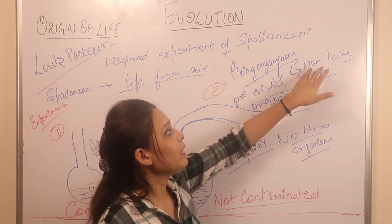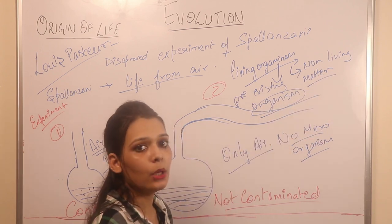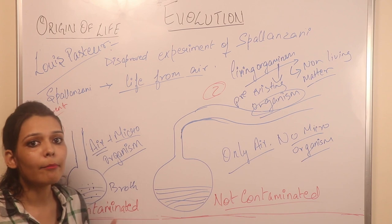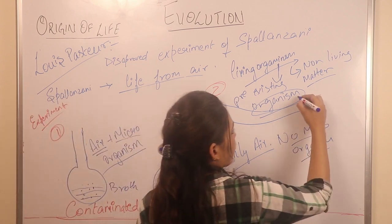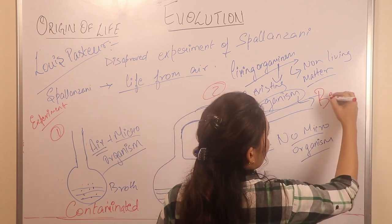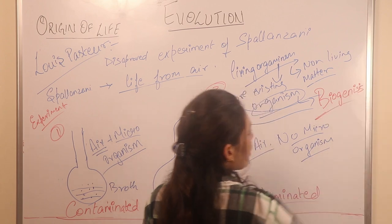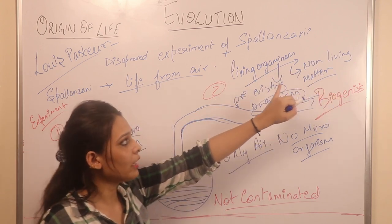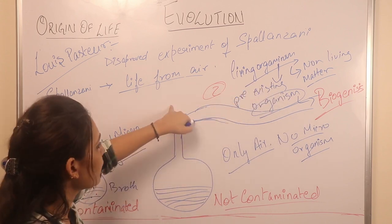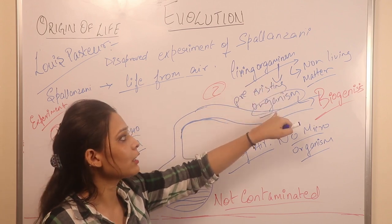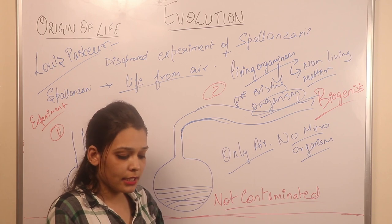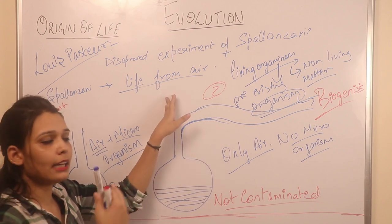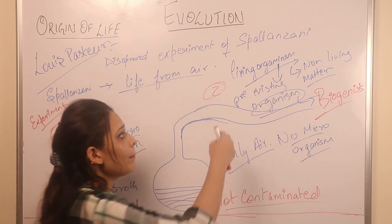We call this Biogenesis. Biogenesis is the origin of a living organism from another living organism, which proved that Abiogenesis is wrong. Louis Pasteur conducted this experiment and proved that a living organism comes from a pre-existing organism. After this, many scientists studied how pre-existing organisms are formed, and this too is explored further.